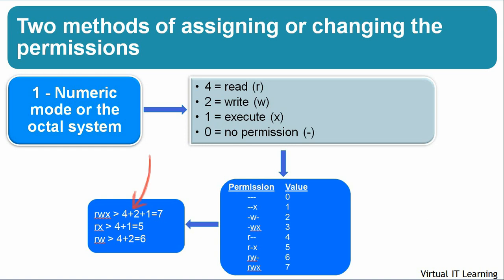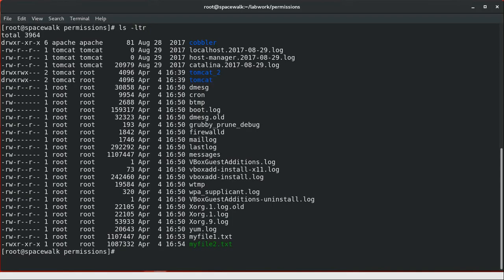For example, read, write, and execute would be 4 plus 2 plus 1 equals 7. Read and execute would be 4 plus 1 equals 5. Read and write would be 4 plus 2 equals 6. Because you set separate permissions for owner, group, and others, you need a three-digit number representing all three groups. For example, to set 755 permissions on a file or folder, we will use the chmod 755 command on the target file.